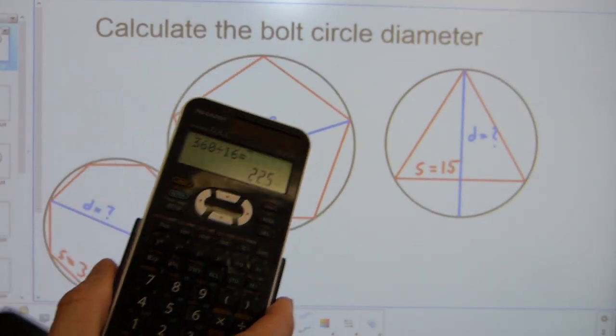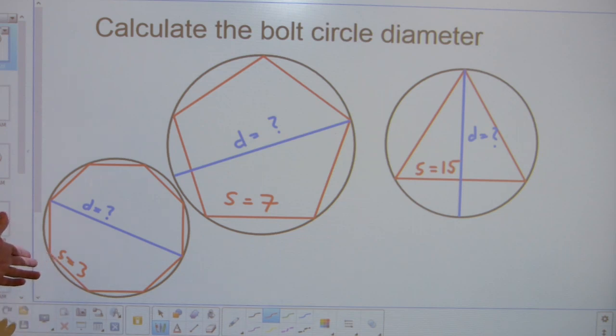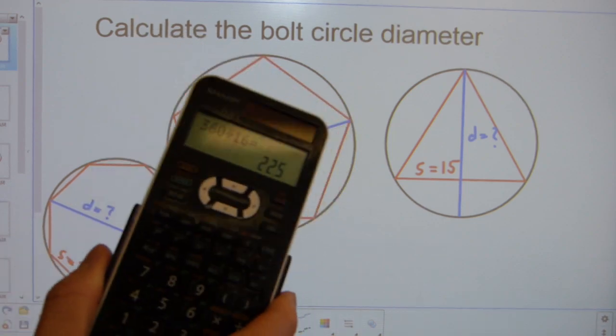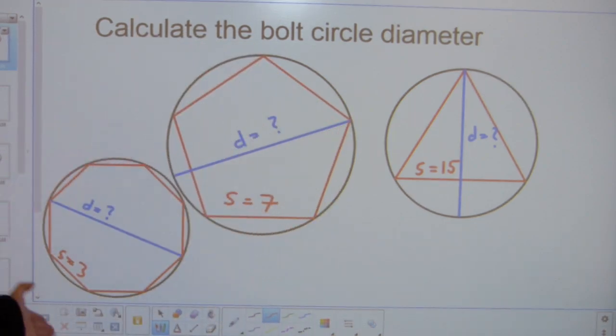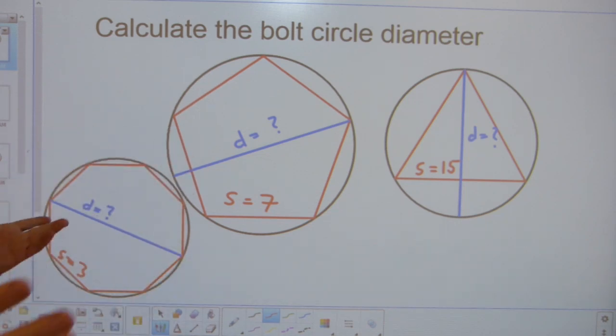You're going to be calculating with whatever the side length here is, three in this case, three inches, three whatever. Three divided by sine 22 and a half gets you your pitch circle diameter in 10 seconds. So that's how the calculation goes. It's a little bit of explanation about it. Thank you very much for watching.